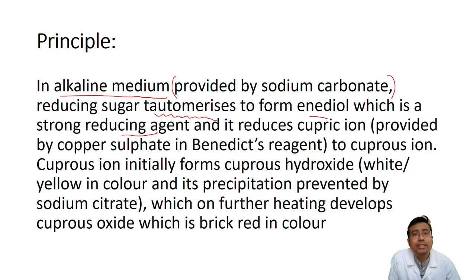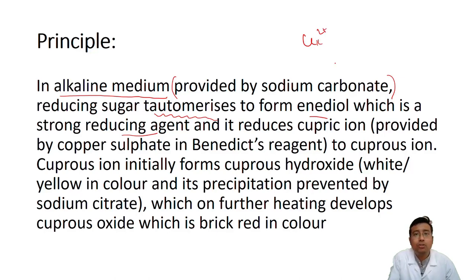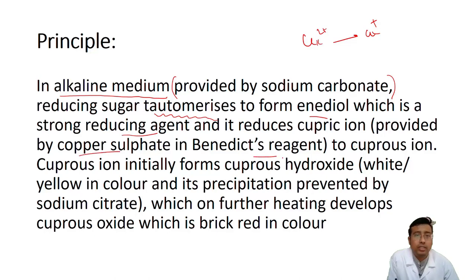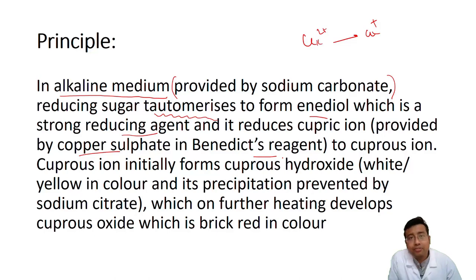What this reducing agent does is it reduces cupric ion (Cu2+) to cuprous ion (Cu+). The cupric ion is provided by copper sulphate present in Benedict's reagent. Benedict's reagent contains CuSO4·5H2O, the crystal we dissolve, which is blue in colour — and that is converted to cuprous ion.